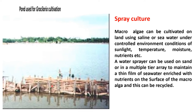Spray culture: macroalgae can be cultivated on land using saline or sea water under controlled environmental conditions of sunlight, temperature, moisture, and nutrients. The water supply is used on sand or in multiple-tier trays to maintain a thin film of sea water enriched with nutrients on the surface of the macroalgae, and this water can be recycled.